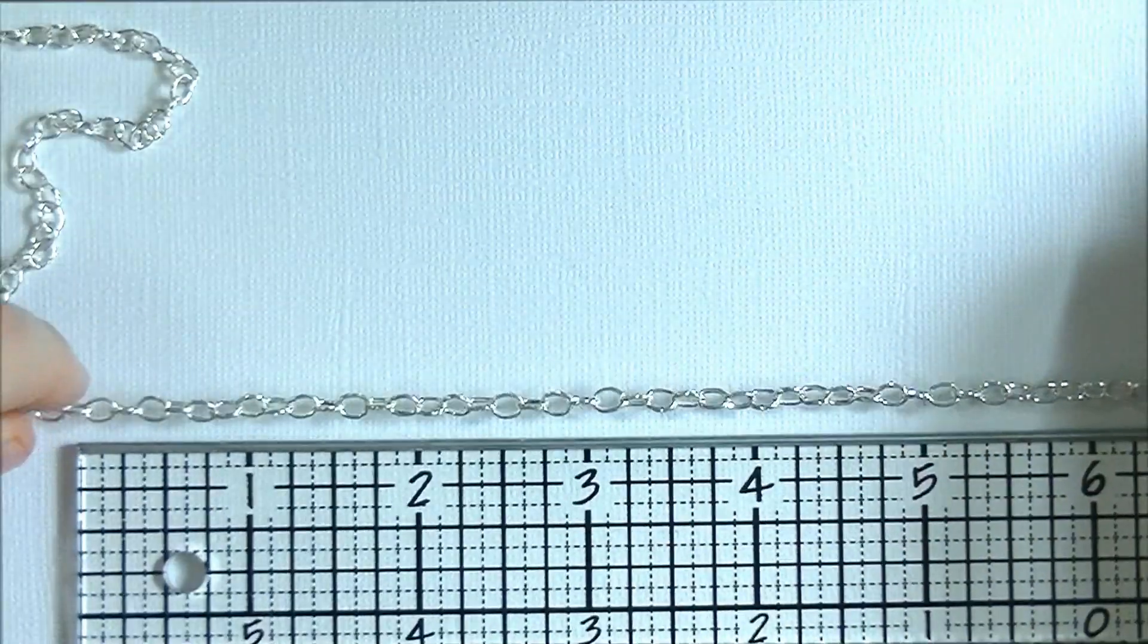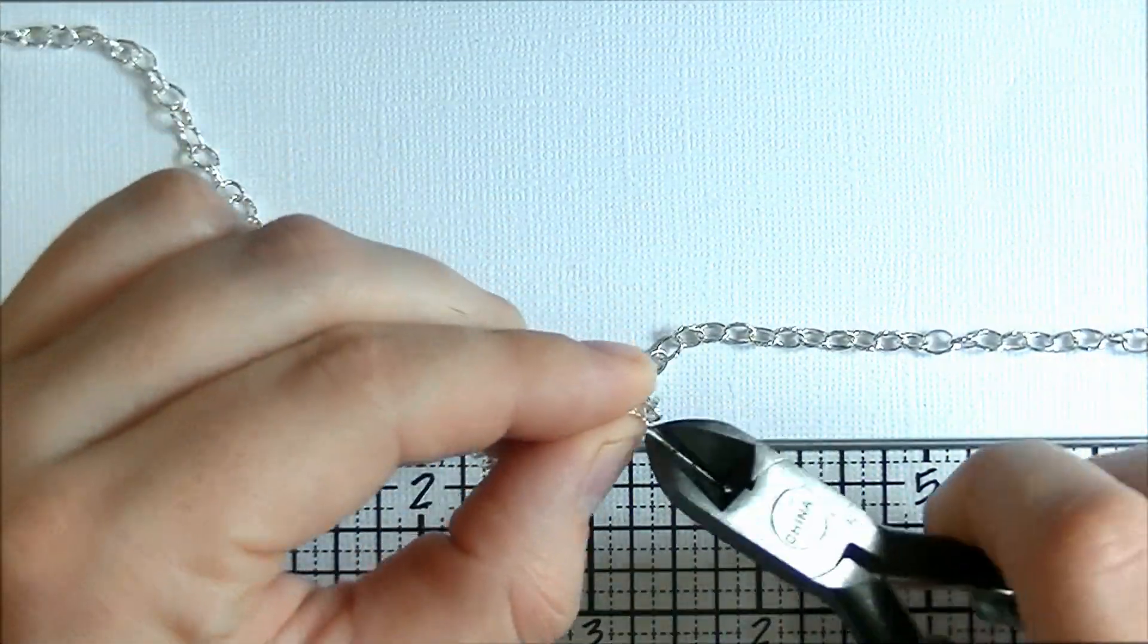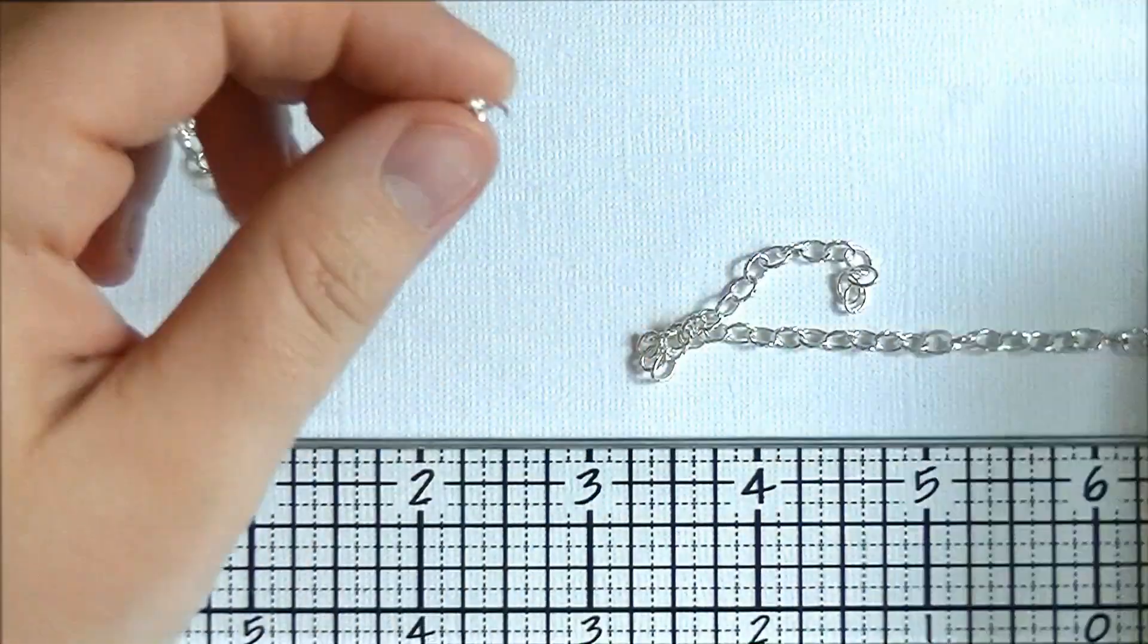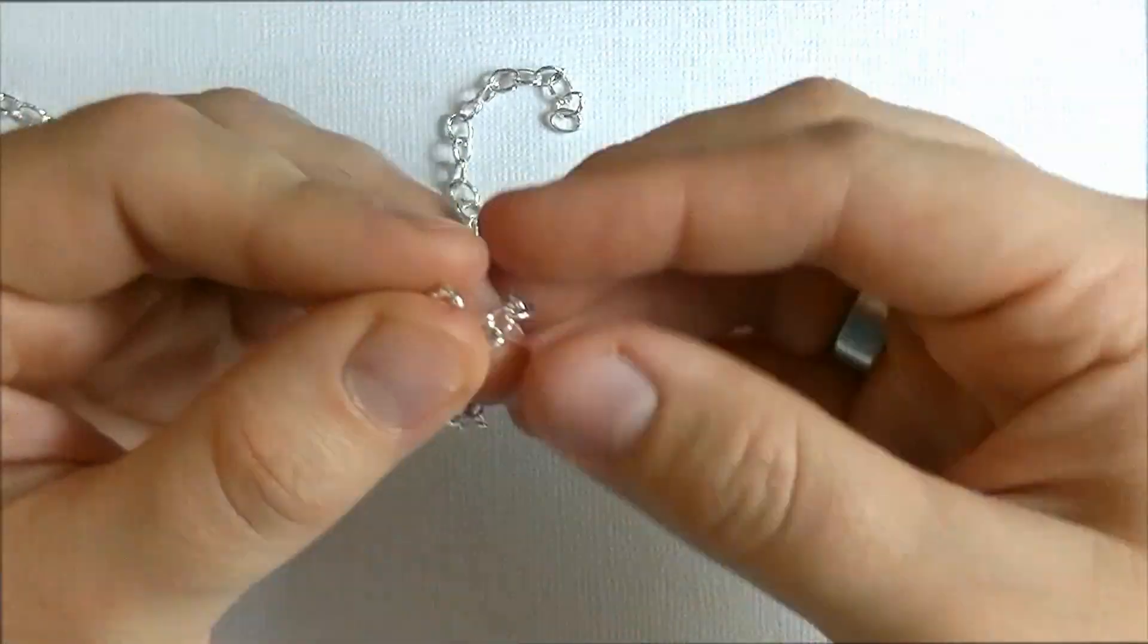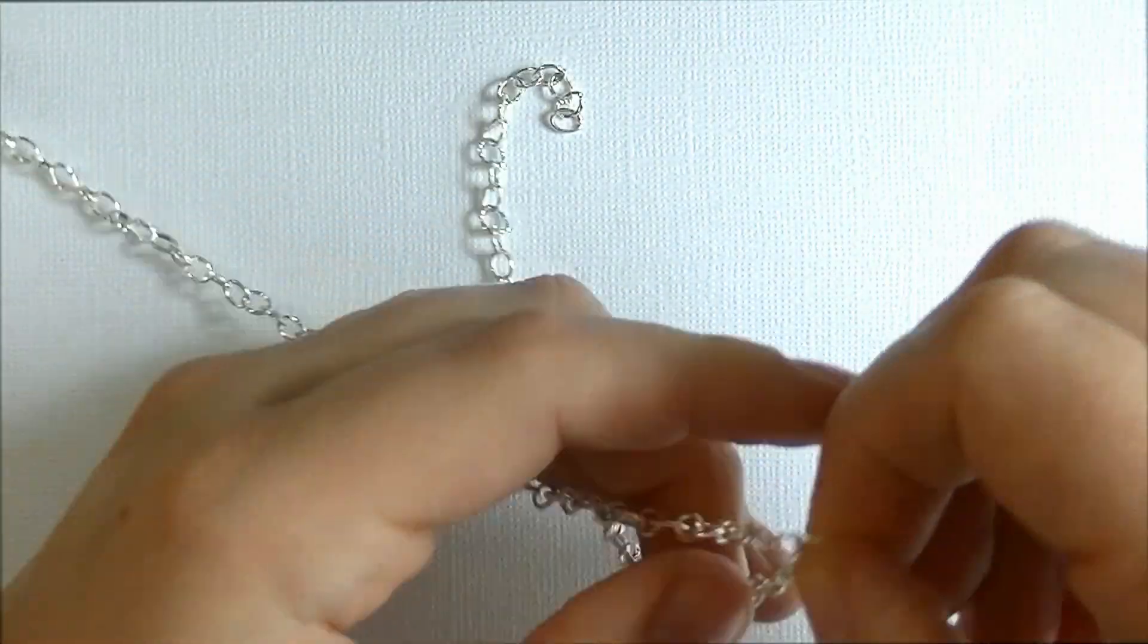Next, you'll want to take your chain and measure out how much you'll need to make your necklace the length you want. I always make my necklaces around 22 inches just to be a safe length.